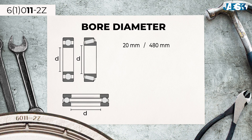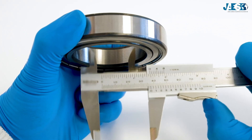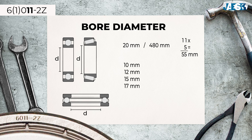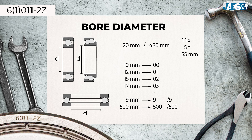Bores with dimensions between 20 mm and 480 mm are identified with a two-digit number. To obtain the actual bore size, it is necessary to multiply this number by 5. On this bearing, the code 6011-2Z identifies a hole diameter of 55 mm with the number 11, as we can also see by measuring it with a caliper. The 10, 12, 15, and 17 mm bores are an exception, referred to by the codes 00, 01, 02, and 03 respectively. Generally, the diameter is explicitly indicated in mm and can be separated by a slash in situations where the bores are small — equal to or less than 9 mm — or of large dimensions, equal to or over 500 mm.